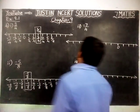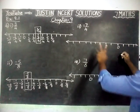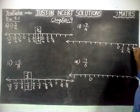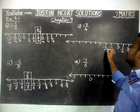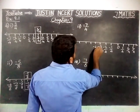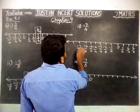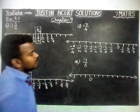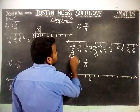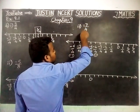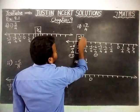Third one: minus 7 by 4. From 0, the denominator is 4, so we divide into 4 parts. Right hand side: 1 by 4, 2 by 4, 3 by 4. Since the number is negative, we move to the left hand side: minus 1 by 4, minus 2 by 4, minus 3 by 4, minus 4 by 4, minus 5 by 4, minus 6 by 4, minus 7 by 4, minus 8 by 4. Here, 4 by 4 equals minus 1, and minus 8 by 4 equals minus 2. So minus 7 by 4 is located between minus 1 and minus 2.